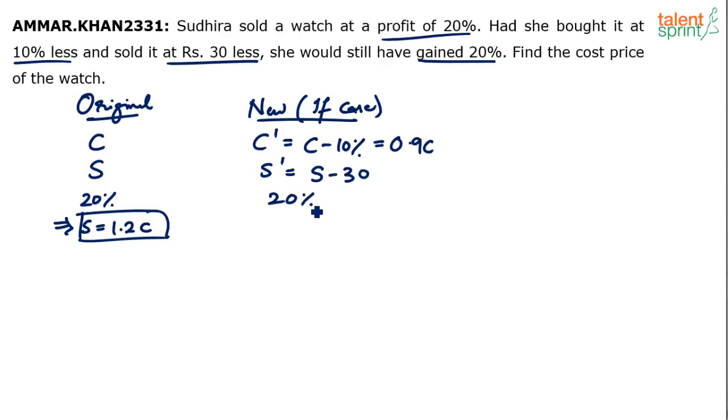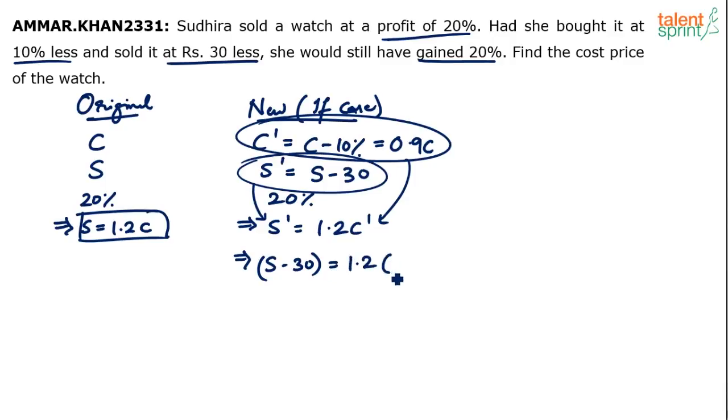What will be the new profit? 20%. The profit is 20% means what? S dash is equal to 1.2 times C dash. The same concept. Profit is 20% implies selling price will be 120% of cost price. But I know S dash in terms of S, substitute. We also know C dash in terms of C, substitute. So what do we get? S minus 30 equals 1.2 times C dash. C dash is 0.9C.